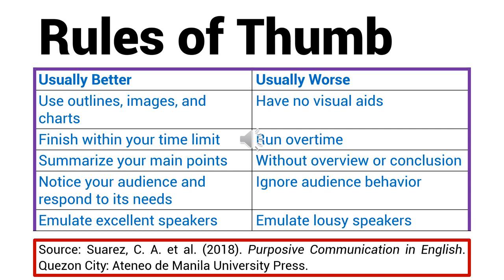Here is the next set of rules of thumb for delivering your presentation. To make your presentation usually better, you need to use outlines, images, and charts; finish within your time limit; summarize your main points; notice your audience and respond to its needs; and emulate excellent speakers. Here are the things to avoid because they will make your presentation usually worse: you do not have visual aids, you run over time, you do the presentation without overview or conclusion, you ignore audience behavior, and never ever emulate lousy speakers.